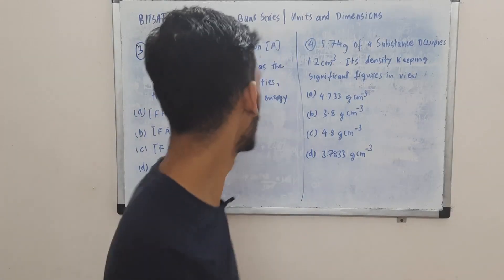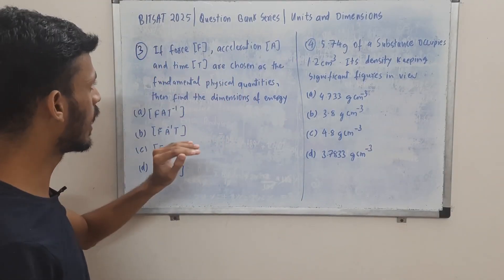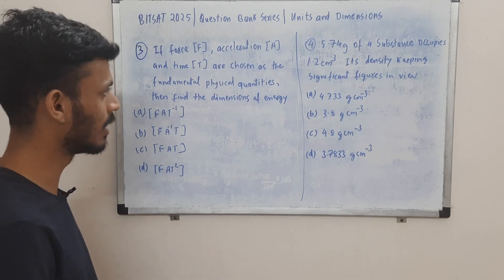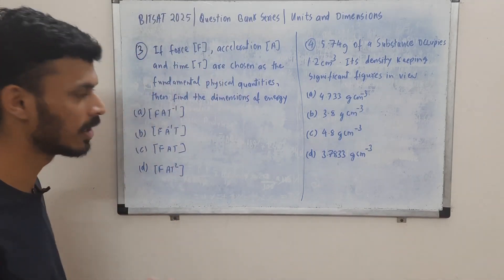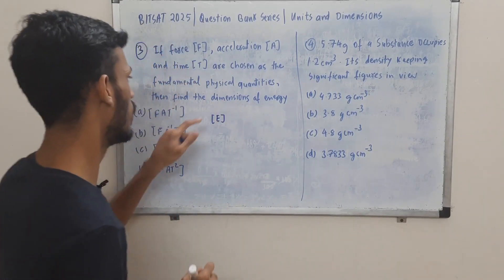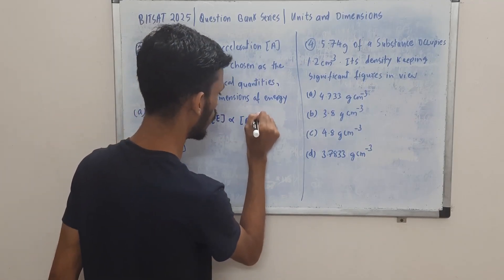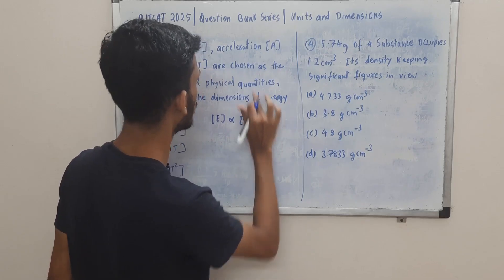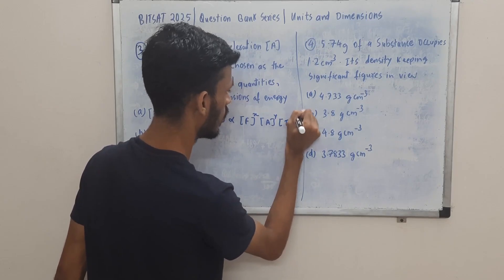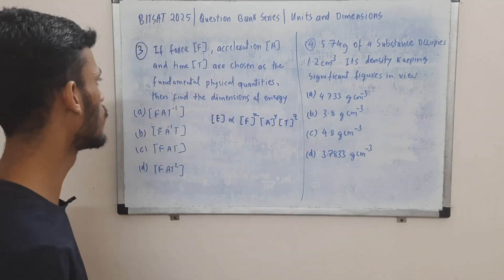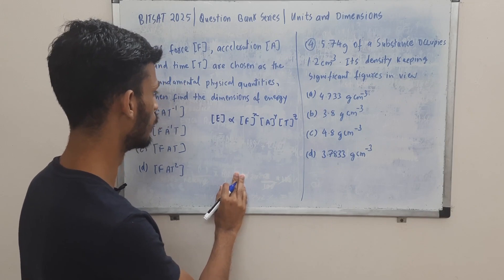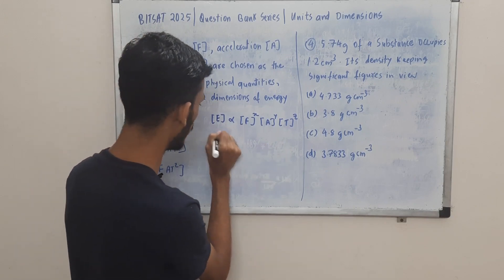Question 3: we are choosing force, acceleration, and time as our fundamental physical quantities, and we are supposed to find the dimensions of energy expressed in terms of these. This is one more classic way of asking a question on dimensional analysis. Energy is proportional to F^x · a^y · t^z — we replace proportionality by equality and find x, y, z. The dimensions of energy are ML²T⁻², from ½mv².